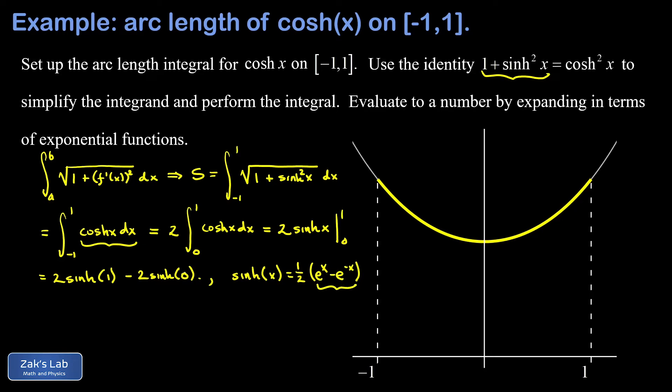The surviving term here is when I plug in x equals one, so I end up with two times the sinh of one, which is one half times e to the one minus e to the negative one. These twos are going to cancel out and I end up with an arc length of e minus one over e.